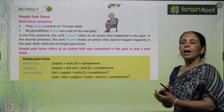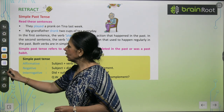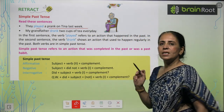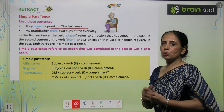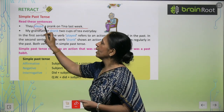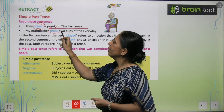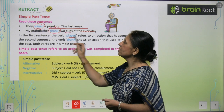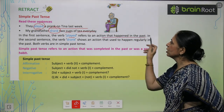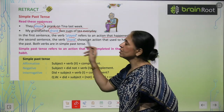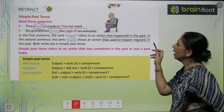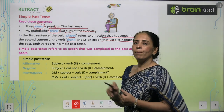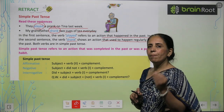So we move further and now we talk about simple past tense. Let's see some sentences: 'They played a prank on Tina last week' — this is an action that already happened. 'My grandfather drank two cups of tea every day.' The word 'played' refers to an action that happened in the past, and 'drank' refers to an action that regularly happened in the past. This shows simple past tense.